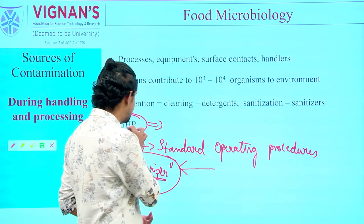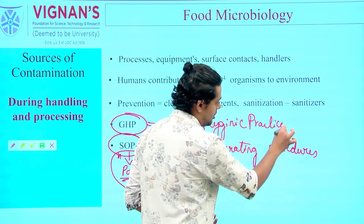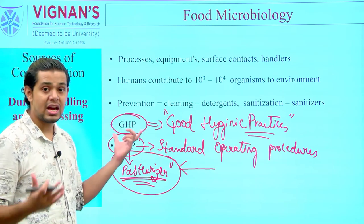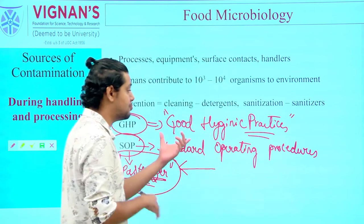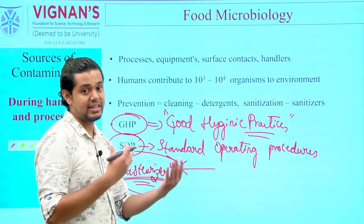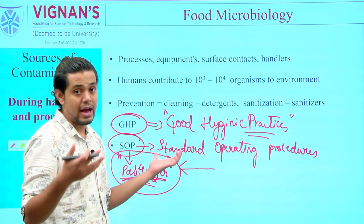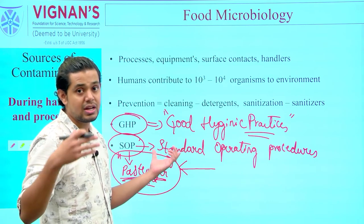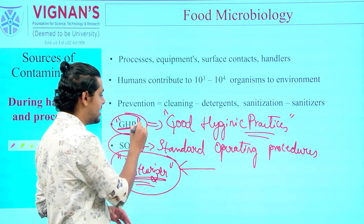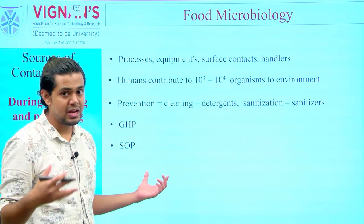Good hygienic practices (GHP) must also be in place. Anyone manufacturing, handling, or processing food must be properly dressed — wearing a clean apron, proper headgear, a mask, and protective gloves. There is always a possibility of transmission of skin microflora, and if a person sneezes while preparing food, it can be a potential carrier of respiratory microflora. GHP must be properly implemented to take care of any possible contamination to the food product.